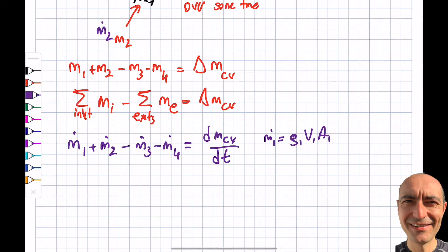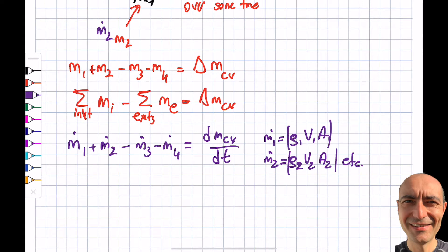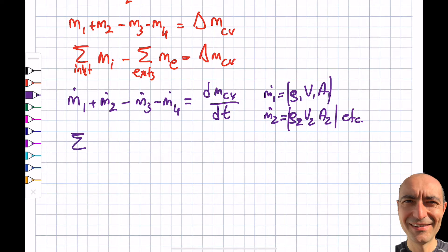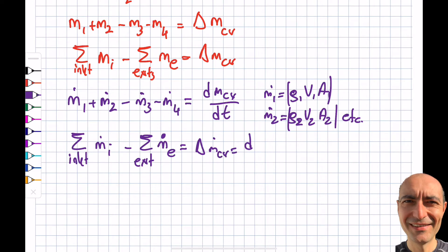As covered in the previous segment, mass flow rate is ρ·v·A. We can generalize this: the summation of inlet mass flow rates minus summation of exit mass flow rates equals dṁ_CV/dt. These are written as positive values — you already account for the sign through the inlet/exit designation.